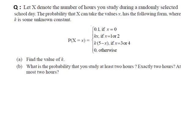Next question: let X denote the number of hours you study during a randomly selected school day. The probability that X takes the value x has the following form, where k is some unknown constant: P(X=x) = 0.1 if x=0; kx if x=1 or x=2; k(5−x) if x=3 or x=4; and 0 otherwise. Part a: find the value of k. Part b: find the probability that you study at least 2 hours, exactly 2 hours, and at most 2 hours.